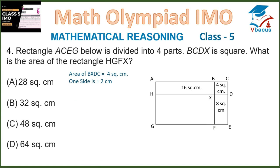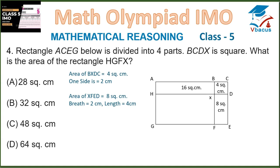Area of square B, X, D, C is 4 square centimeters, so one side will become 2 centimeters. Area of rectangle X, F, E, D is 8 square centimeters, so breadth is 2 centimeters and length will become 4 centimeters — you can divide 8 by 2 because breadth is given, and if you divide area by breadth you will get the length.